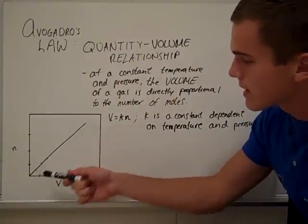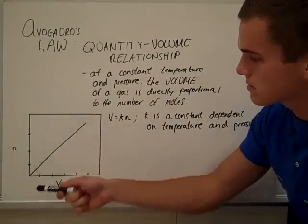Here it's represented on a graph. As V goes up, N goes up. As N goes up, V goes up.